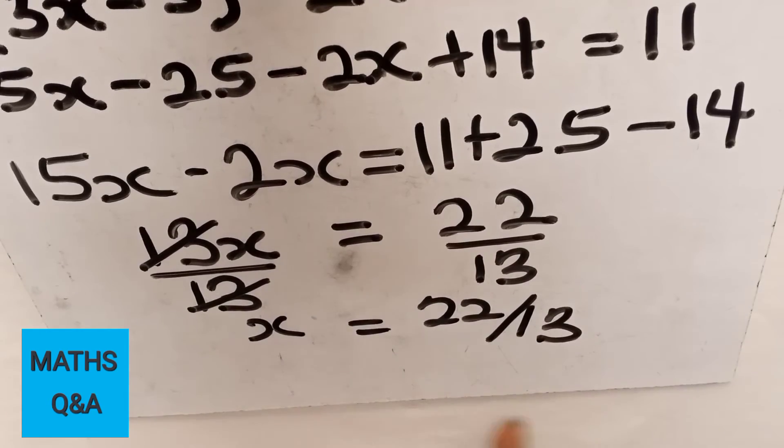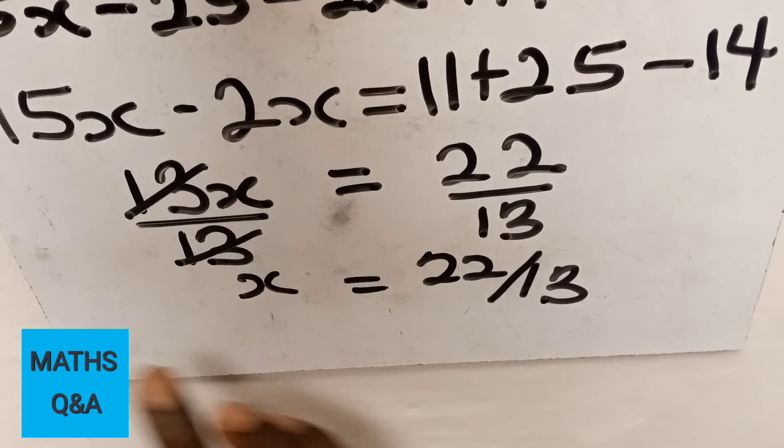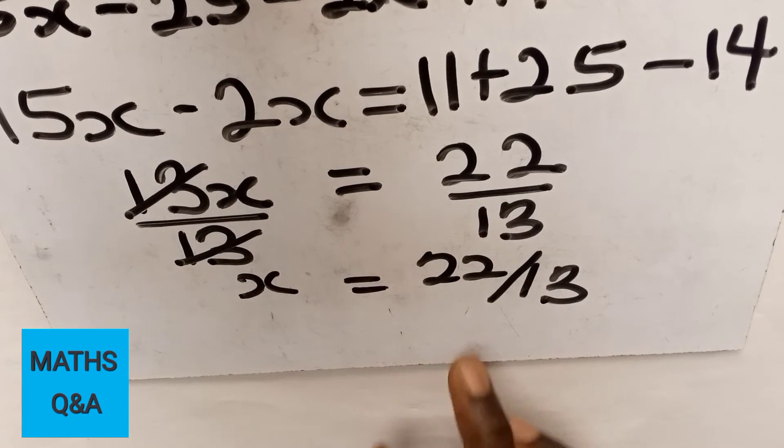22 over 13. Now this is not the answer. We were asked to find the truth set of the equation, so after reaching this, what you have to do is write the truth set.